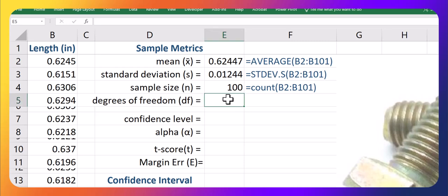So first thing we're going to need is what's called the degrees of freedom, and it's just your sample size minus 1. I'll just comment that out here. So degrees of freedom is just 99 in this case.